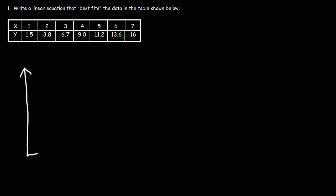Let's say we have these data points, which I'm going to highlight in blue. These data points don't all fall on a straight line. However, what we can do is calculate the equation of a line that best fits this data, where all of the points are as close as possible to that line.